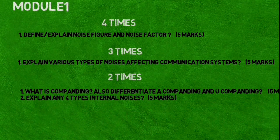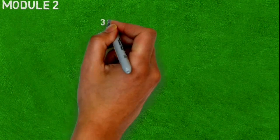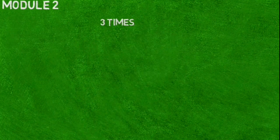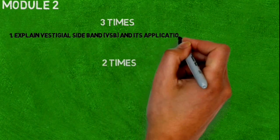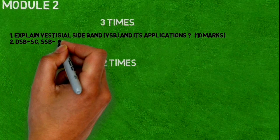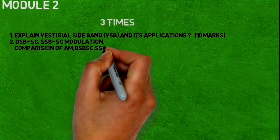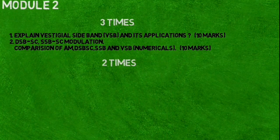Let's see Module number two. Three times repeated questions are: first, explain vestigial sideband and its application. Next, DSB-SC, SSB-SC modulation comparison of AM, DSB-SC, SSB, and VSB.